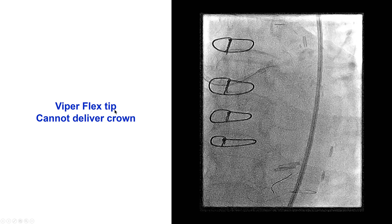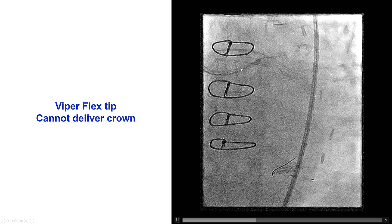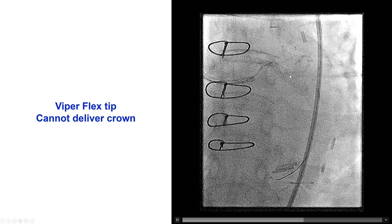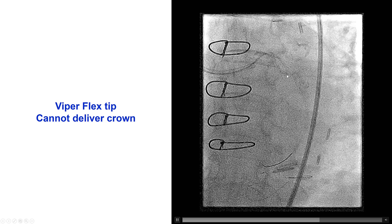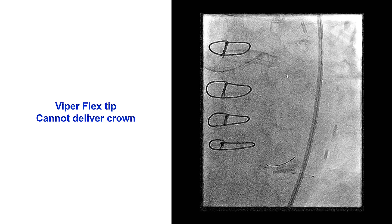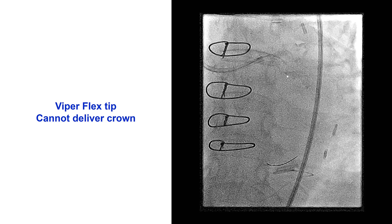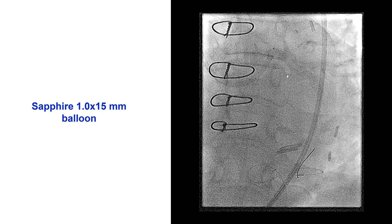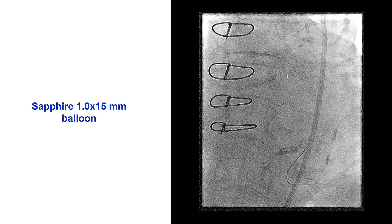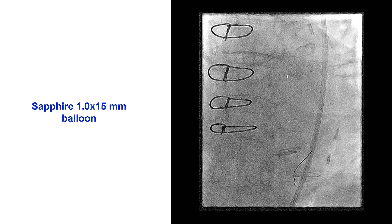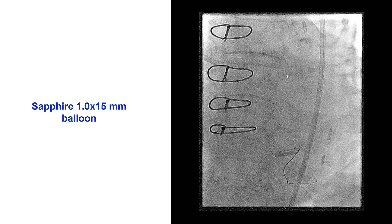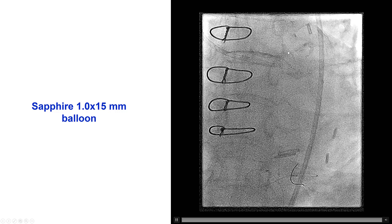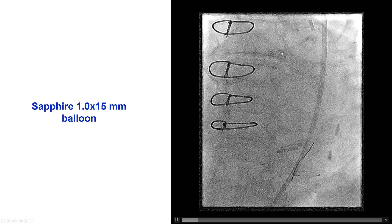We had significant difficulty and could not deliver the atherectomy crown. So we have a balloon — or more accurately — an orbital atherectomy uncrossable lesion. The first thing to do is to try with a small balloon. This was a Sapphire 1.0 by 15; however, this could not be delivered into the LAD.